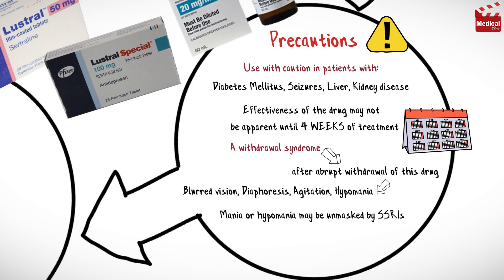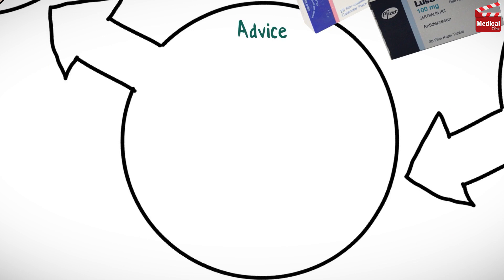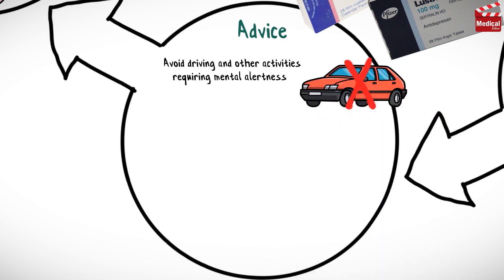Mania or hypomania may be unmasked by selective serotonin reuptake inhibitors. Patients should wear a bracelet identifying their condition and the possibility of developing hypoglycemia. Advice to patients taking sertraline: avoid driving and other activities requiring mental alertness or that are potentially dangerous until response to the drug is known.